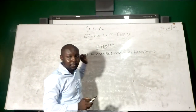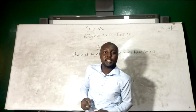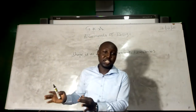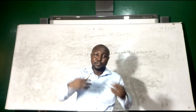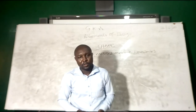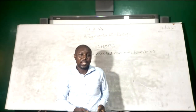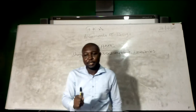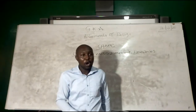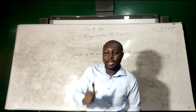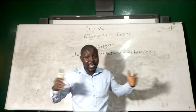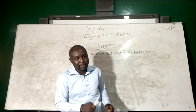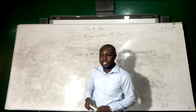We have two types of shapes. We have regular or formal shapes, then we have irregular or informal shapes. What are regular shapes? All geometrical shapes are regular shapes, like circles, squares, triangles, and others. They are all regular shapes.